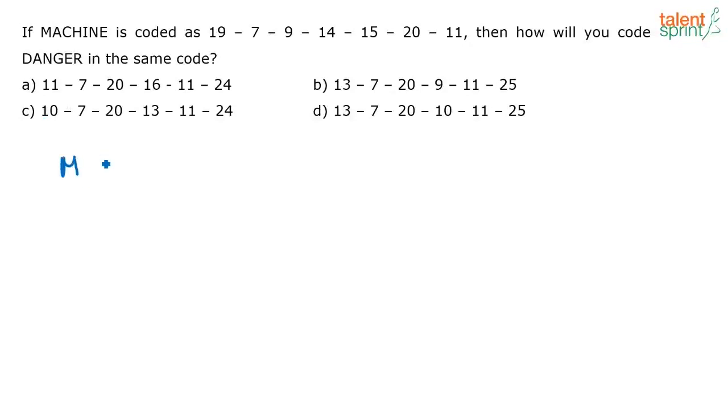See, what is given here? Machine. M, A, C, H, I, N, E. Machine is coded as 19, 7, 9, 14, 15, 20, 11. The logic used here is this. What is the position of M in the alphabetical order? It is 13. Position of A, 1. It is the first letter in the alphabet.